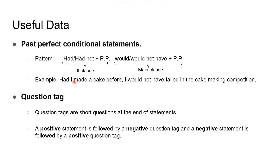For example: 'Had I made a cake before, I would not have failed in the cake-making competition.' The last part of the sentence is a question tag. The question tag takes a short question form at the end of a statement.